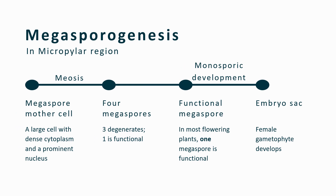Megasporogenesis is the formation of megaspores in the micropylar region of the megasporangium. In this process, a megaspore mother cell with dense cytoplasm and a prominent nucleus undergoes meiosis to produce four megaspores. Out of the four, three degenerate, and the only functional megaspore undergoes elaborate monosporic development to give rise to the female gametophyte.